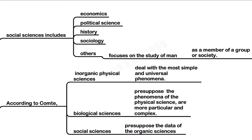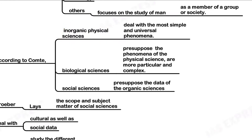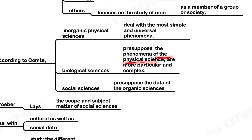The common branches of social sciences include politics, political science, psychology, sociology, geography, and archaeology — even in India, archaeology is included. According to Comte, inorganic physical sciences deal with the most simple and universal phenomena; biological sciences presuppose the phenomena of physical sciences and are more complex; and social sciences presuppose the data of the organic sciences.